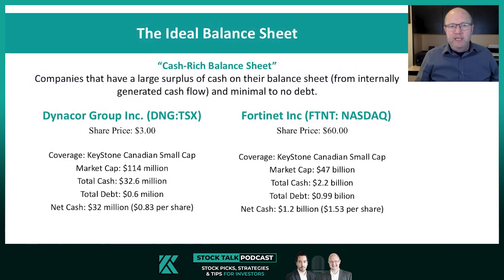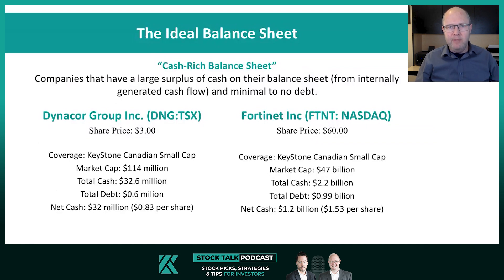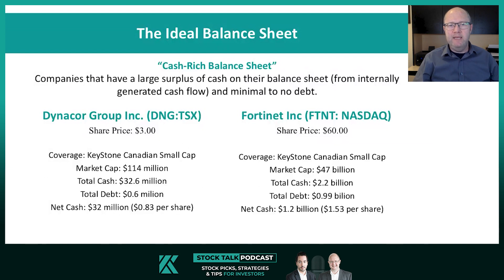An ideal balance sheet is what we would call a cash-rich balance sheet. This is a company that has a large surplus of cash on the balance sheet — lots of cash. We want to see it coming from operations, not that they've raised a bunch of money by selling shares, but rather from internally generated cash flow. They've amassed a huge cash balance. They have minimal to no debt, so the cash balance substantially exceeds the debt level. This is a net cash business, or what we would call a cash-rich business.